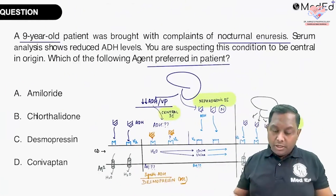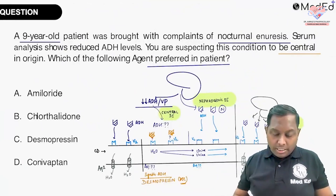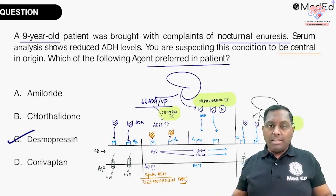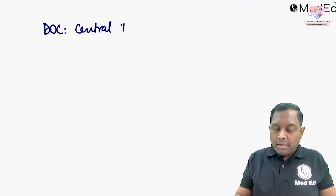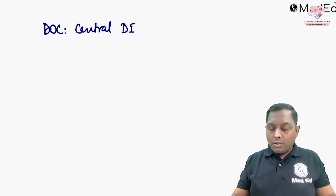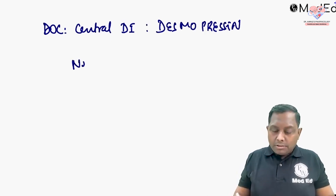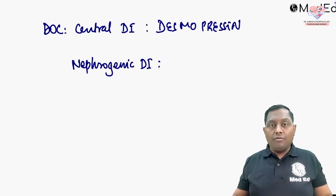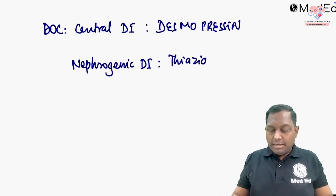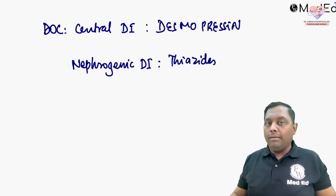When you suspect this condition to be central in origin, the answer is desmopressin. To summarize: the drug of choice for central diabetes insipidus is desmopressin — that is the take-home message. For nephrogenic diabetes insipidus, the drug of choice is thiazide diuretics, which work through an alternative mechanism by increasing cyclic AMP.